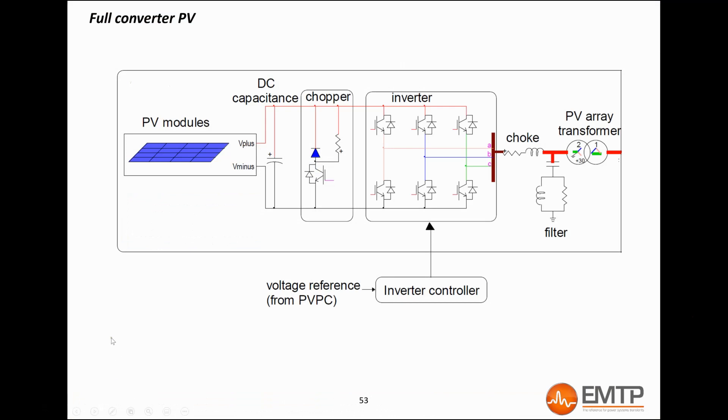Full converter PVs transmit all the power produced by their solar panels with a DC-AC converter system which uses voltage source converter. The PV array might be connected directly to the DC bus or through an additional DC-DC converter which is not represented in this figure.